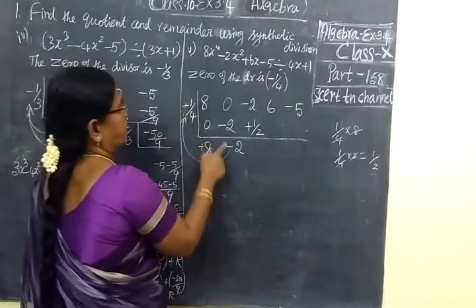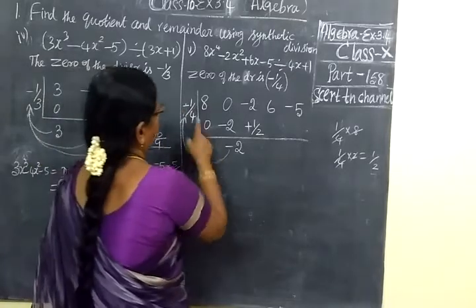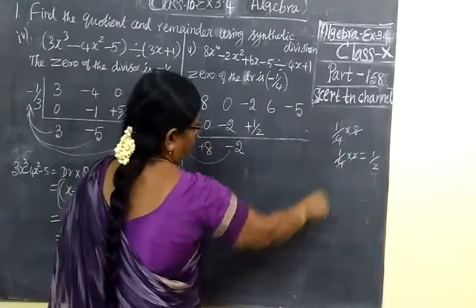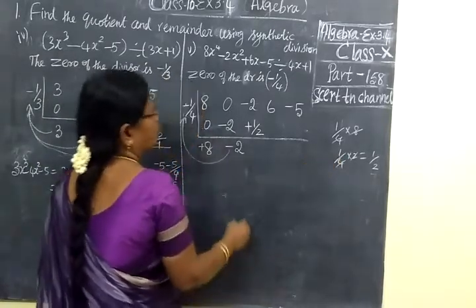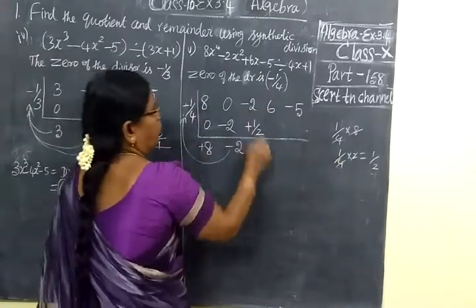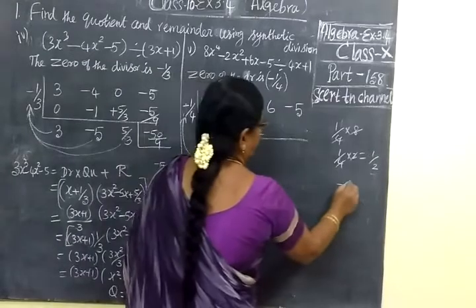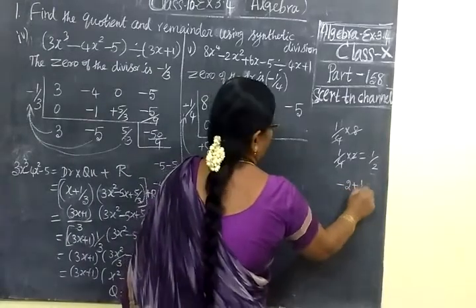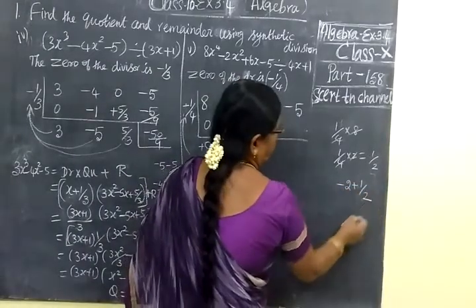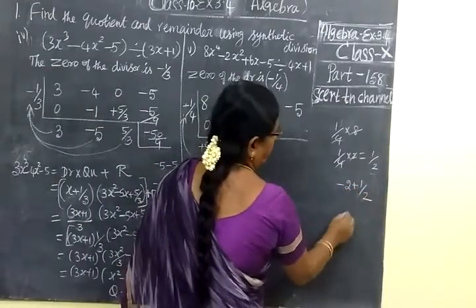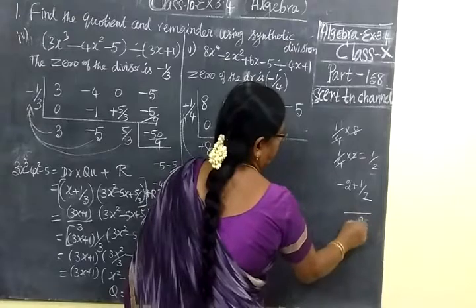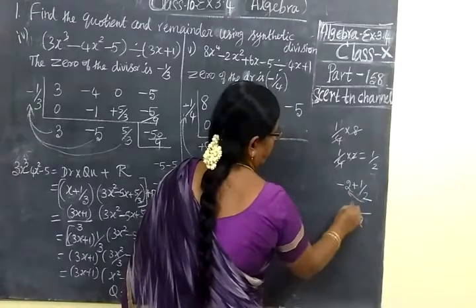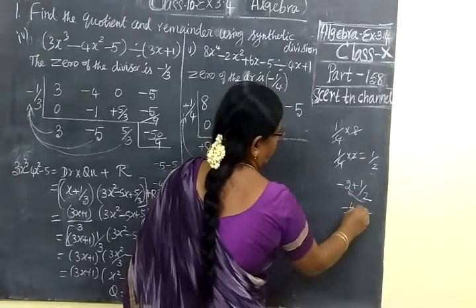Minus into minus is plus. 1 by 2. Now this is simplified: minus 2 plus 1 by 2. LCM is 2. Cross multiply: minus 4 plus 1.